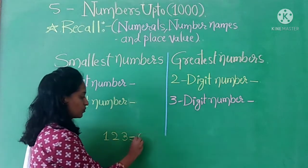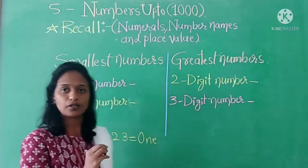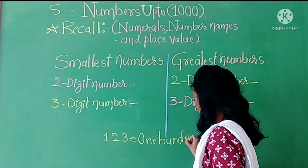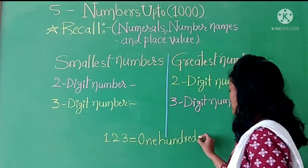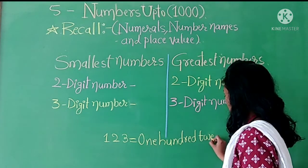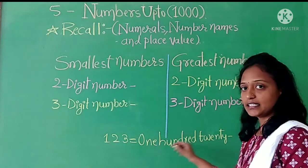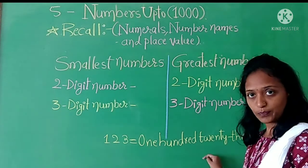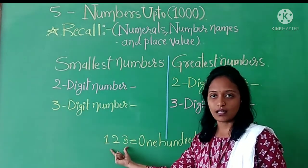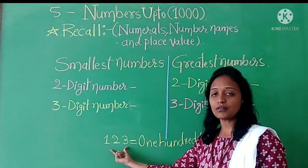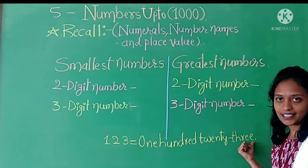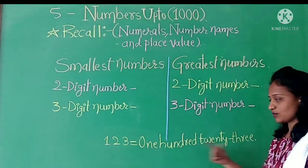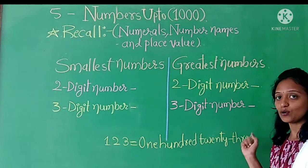One hundred twenty three — we write it in words as: one hundred twenty three. I will repeat: they give the numeral, we have to write the name in words. So, one hundred twenty three is written as 'one hundred twenty three.' I hope you are getting my point.